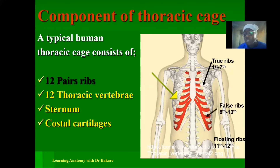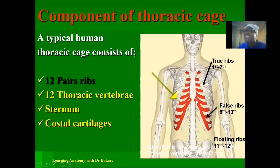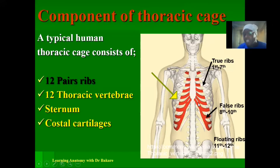The next group are the false ribs — ribs 8 to 10. They are called false ribs because they have a connection with the thoracic vertebra posteriorly, but only an indirect connection with the sternum anteriorly. The true ribs are directly connected to the sternum, but the false ribs are connected to the costal cartilages located above them, so they do not have a direct connection with the sternum — their connection is indirect. That is why they are called the false ribs.